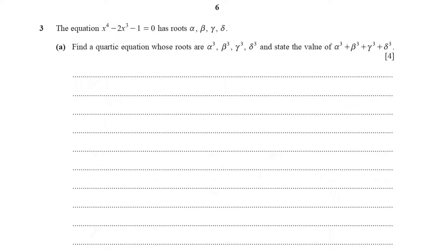Question 3: the equation x⁴ minus 2x³ minus 1 equals 0 has roots alpha, beta, gamma, and delta. Part (a): find the quartic equation whose roots are alpha cubed, beta cubed, gamma cubed, and delta cubed, and state the value of alpha cubed plus beta cubed plus gamma cubed plus delta cubed.